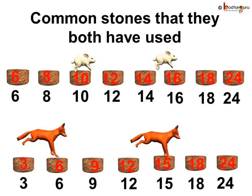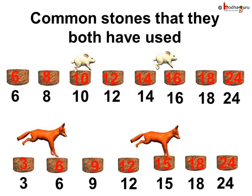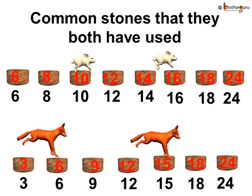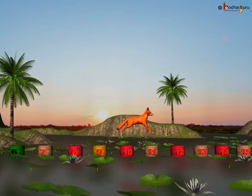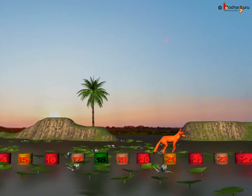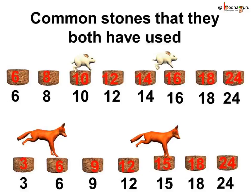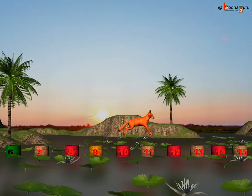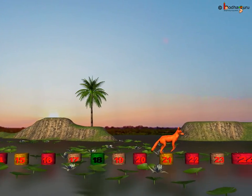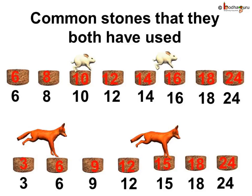Here, both the Fox and Rabbit used the stones numbered 6, 12, 18 and 24. So, we can say 6, 12, 18, 24 are the common multiples of both 2 and 3. All the stones which the rabbit used first and then the Fox used turned green, to show these were used by both the rabbit and the Fox, and that they are common multiples of 2 and 3.